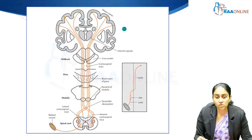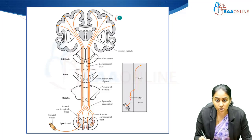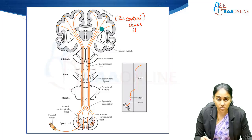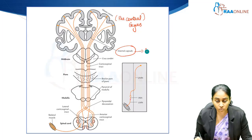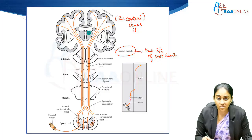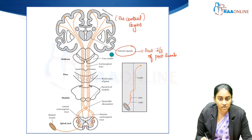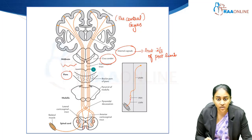From the motor cortex situated in the precentral gyrus, our motor pathway begins. From the precentral gyrus, these fibers originate and travel through the subcortical region, then through the internal capsule. Most of the fibers travel through the anterior two-thirds of the posterior limb of the internal capsule — that is what contains the corticospinal tract. It then travels through the crus cerebri in the midbrain, then through the pons, and finally reaches the medulla.